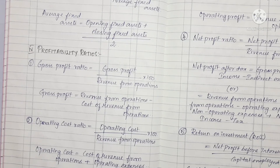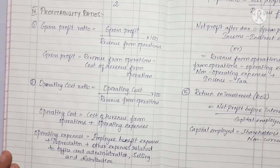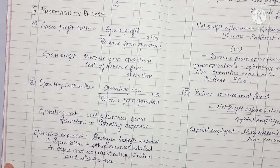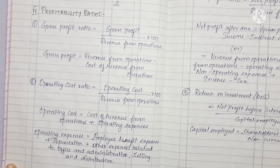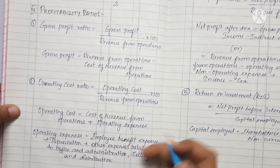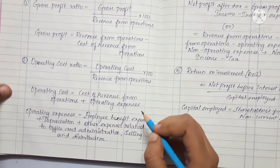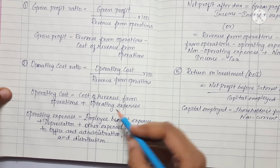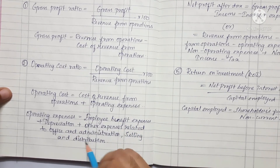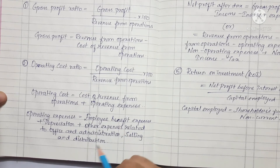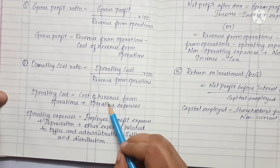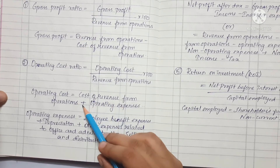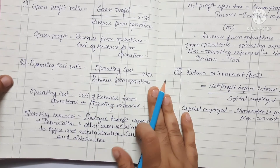Next is Operating Cost Ratio, which equals Operating Cost divided by Revenue from Operations multiplied by 100. Operating Cost is Cost of Revenue from Operations plus Operating Expenses. Operating Expenses include Employee Benefit Expenses, Depreciation, and other charges related to Office, Administration, Selling and Distribution.